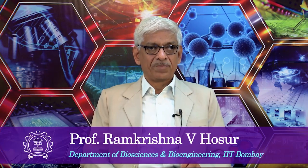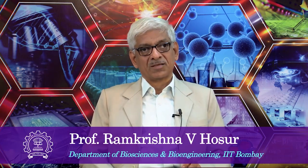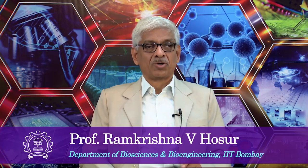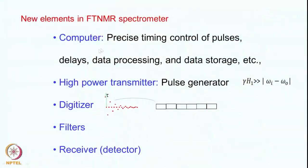Let us continue with the discussion of the FTNMR spectrometer we introduced in the last class. As a recap, the new elements in the FTNMR spectrometer include the computer, because everything is now computer controlled. We have to be precise with respect to the timing of the pulses, the control of the pulses, and various other aspects as we will see many times in due course.